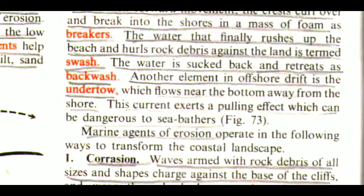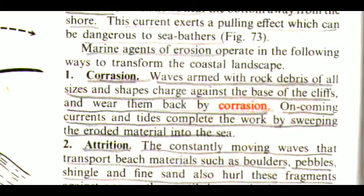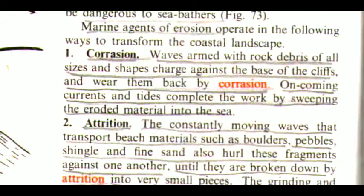Marine agents of erosion operate in the following ways to transform the coastal landscape. The first one is corrasion. Waves armed with rock debris of all sizes and shapes charge against the base of the cliffs and wear them back by corrasion. Oncoming currents and tides complete the work by sweeping the eroded material into the sea.